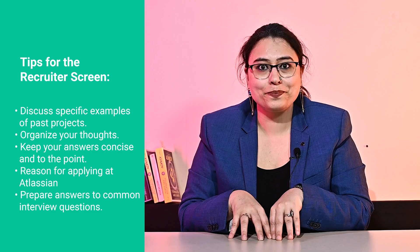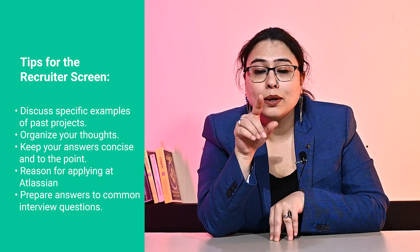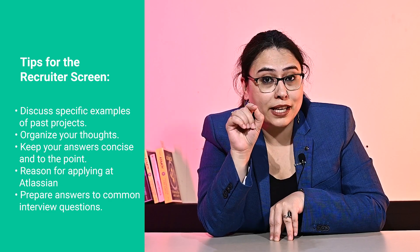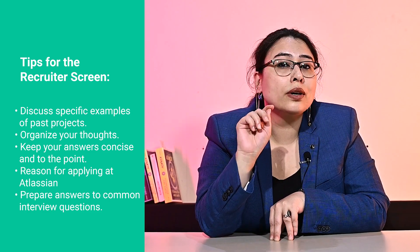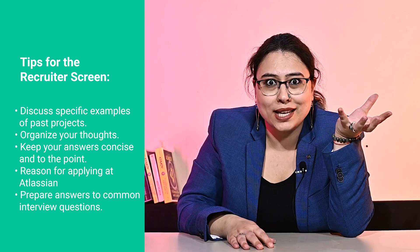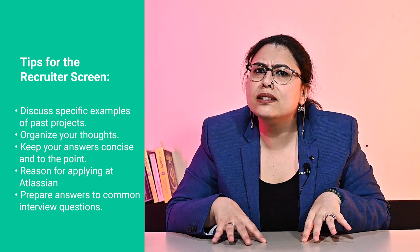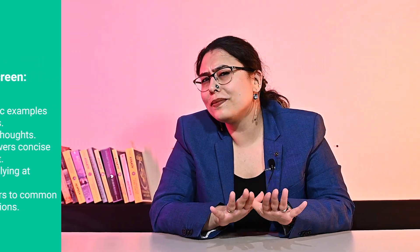Here are five tips for getting through this round. Prepare specific examples from your past projects or experiences that align with the skills and qualifications required for this role. Organize your thoughts in advance around topics like what was your contribution, how things went, and what you could have done to improve things. Keep your answers short and crisp. Have a clear reason for why you're applying at Atlassian and why you think you'd succeed there. This round often starts with the old favorite — 'tell me something about yourself' — so it is very useful to have a nice and short intro ready to go.